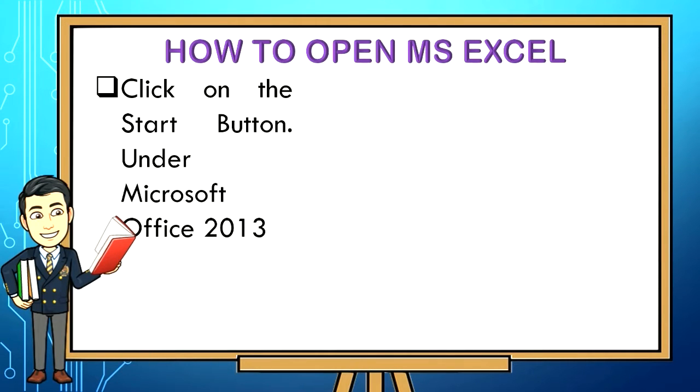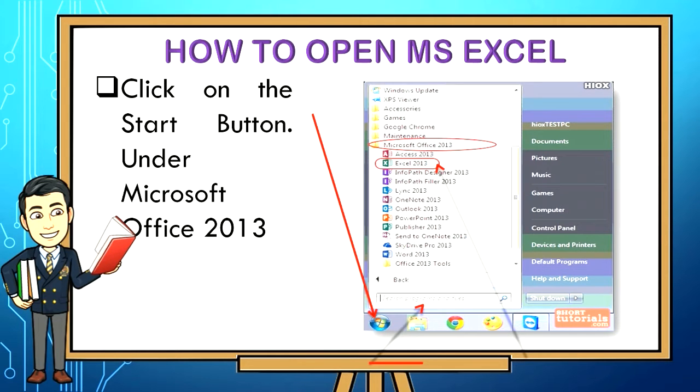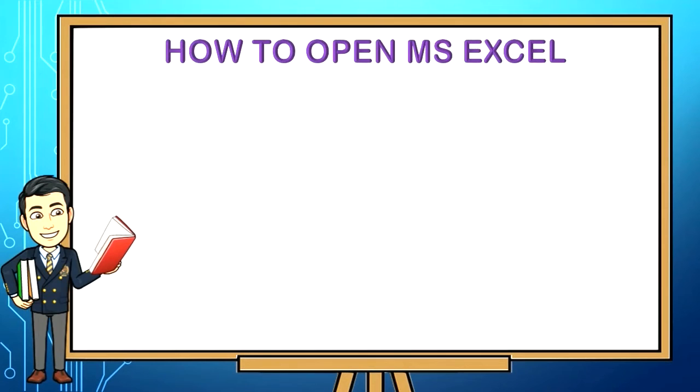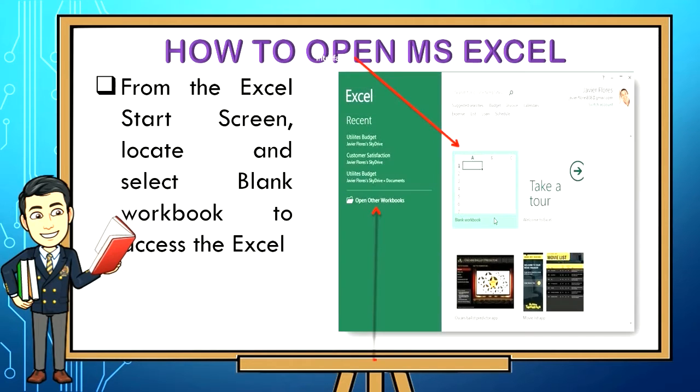How to open MS Excel: Click on the start button under Microsoft Office 2013. The Microsoft Excel 2013 program will open. From the Excel start screen, locate and select blank workbook to access Excel. Click open other workbooks to work on an existing workbook.